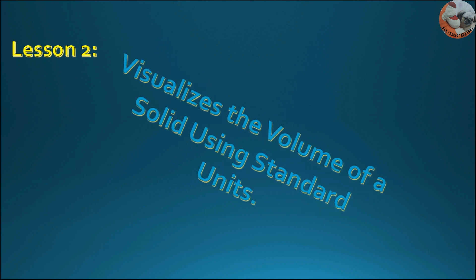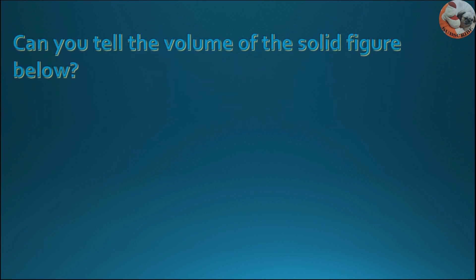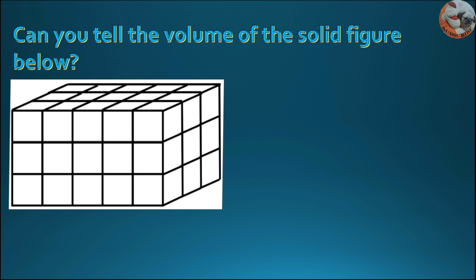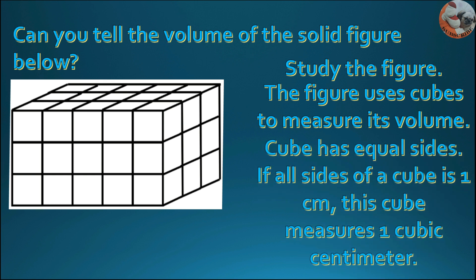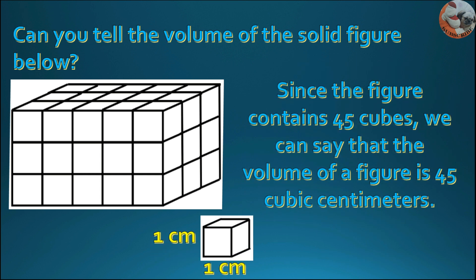Lesson 2: Visualize the volume of a solid using standard units. Can you tell the volume of the solid figure below? Study the figure. The figure uses cubes to measure its volume. A cube has equal sides. If all sides of a cube are 1 cm, this cube measures 1 cm³. Since the figure contains 45 cubes, we can say that the volume of the figure is 45 cm³.